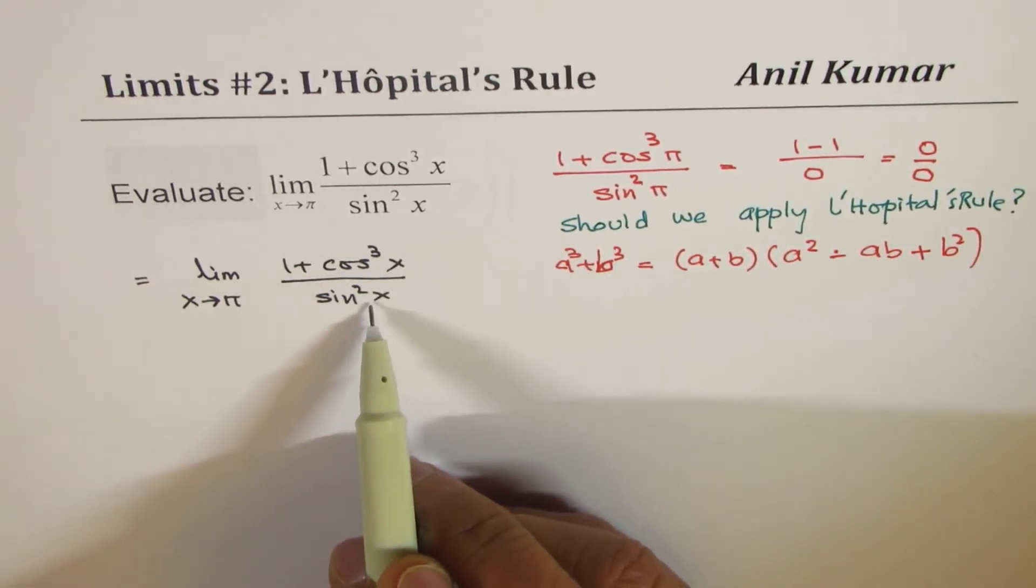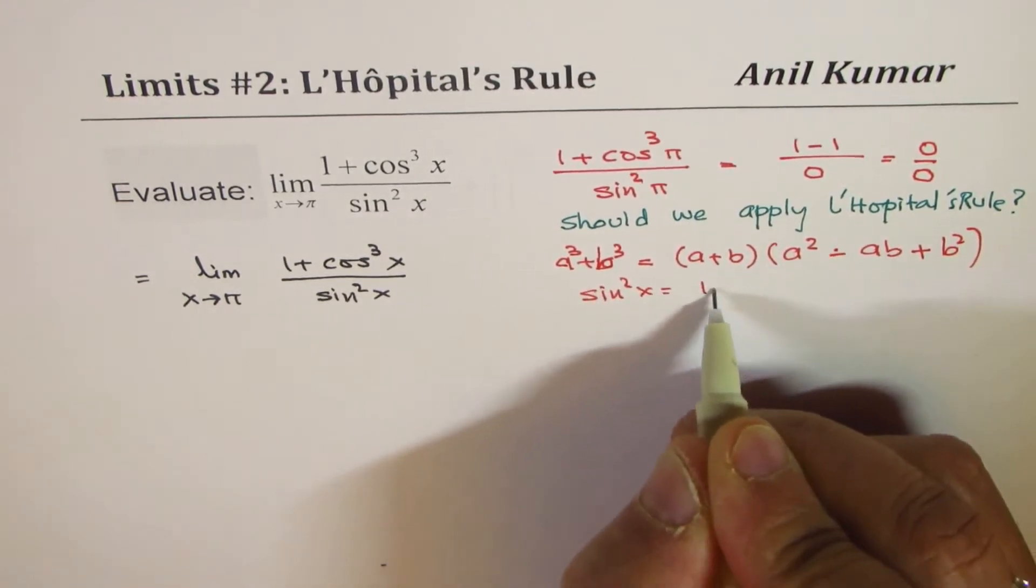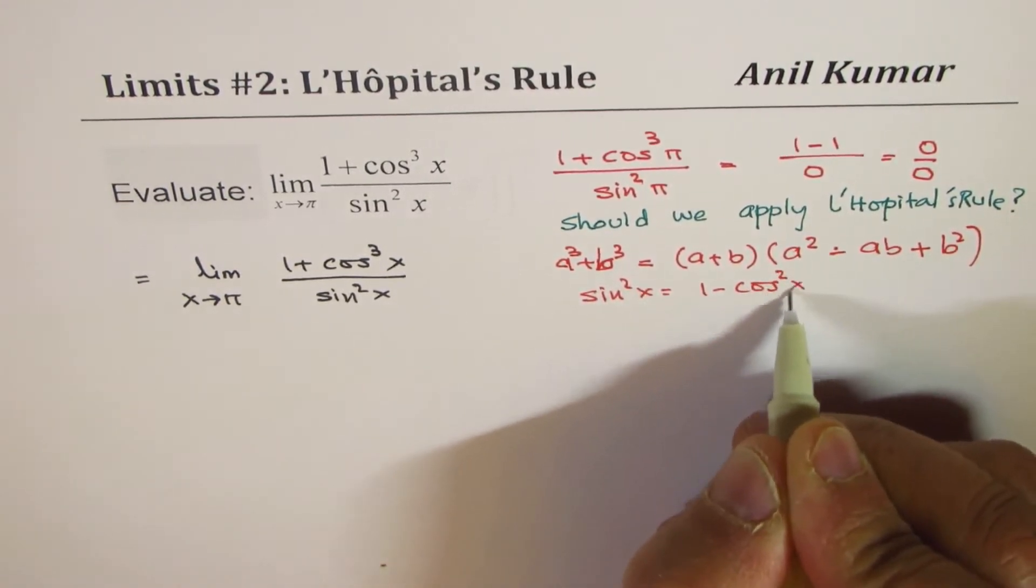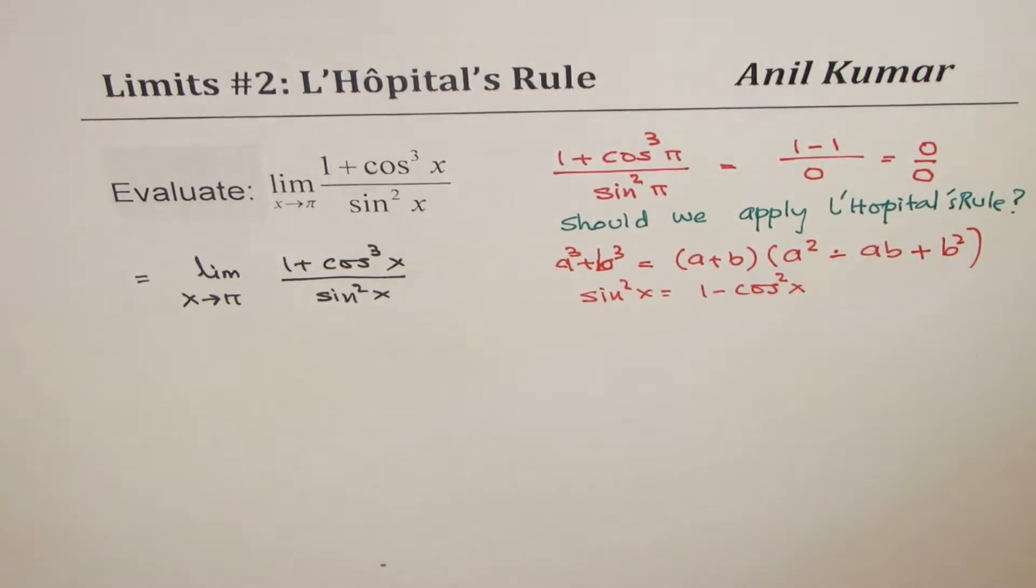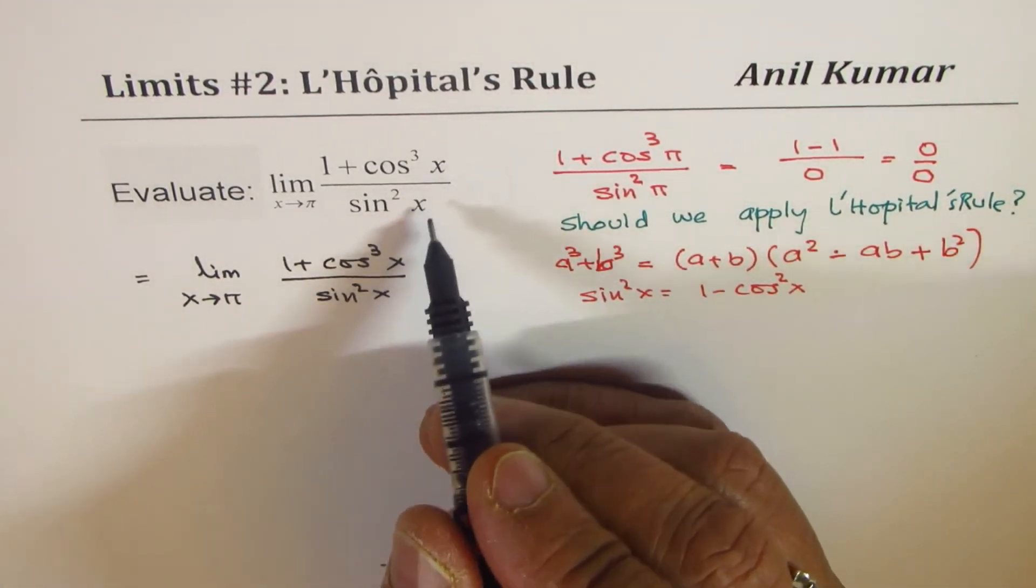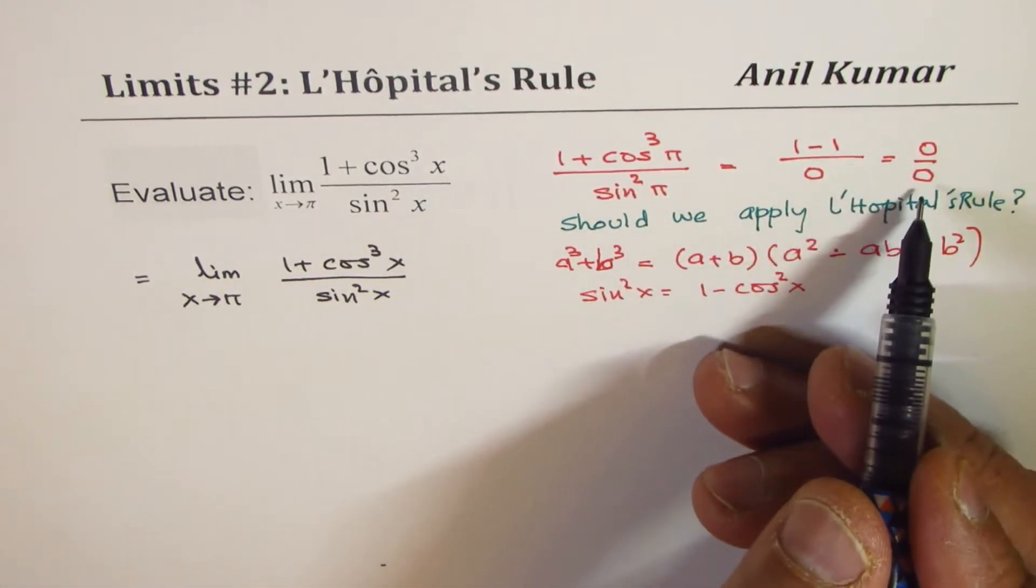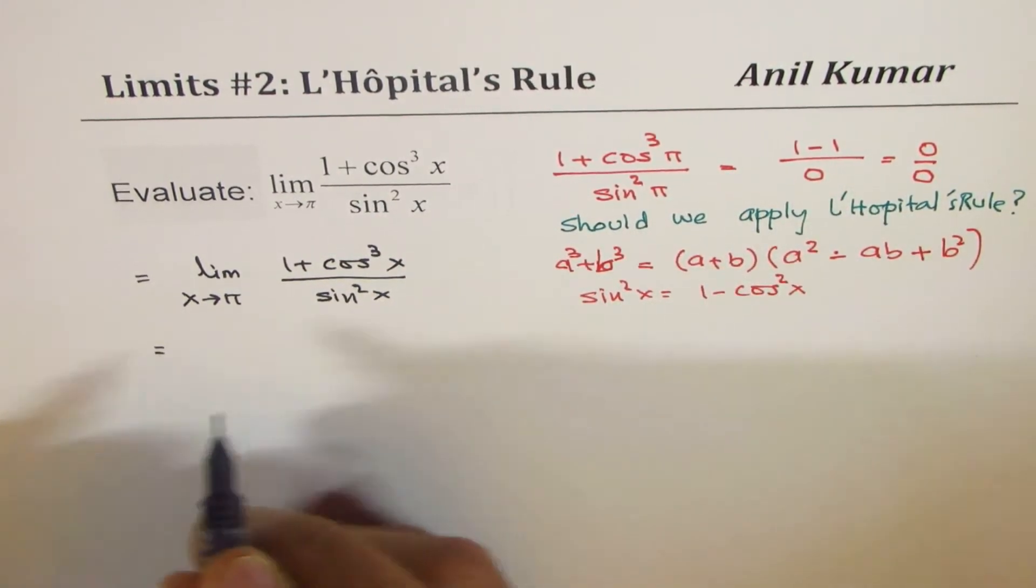The denominator sin²x could be written as 1 - cos²x, which can also be factored. 0/0 also indicates that we have common factors in numerator and denominator which makes this 0/0. So taking advantage of this, we should try factoring.